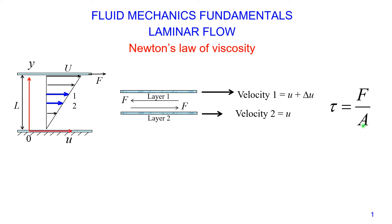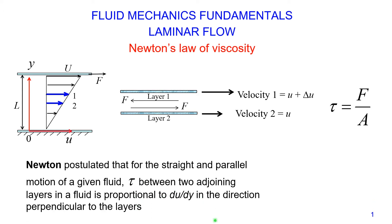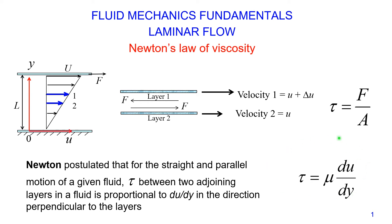Newton postulated that for the straight and parallel motion of a given fluid, the shear stress between two adjoining layers is proportional to the velocity gradient in the direction perpendicular to the layers. Mathematically, shear stress equals the proportionality coefficient — dynamic viscosity — multiplied by the velocity gradient in the direction perpendicular to the layers, which is our vertical direction Y.